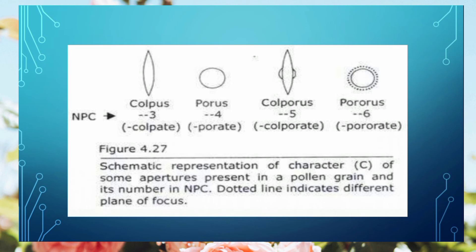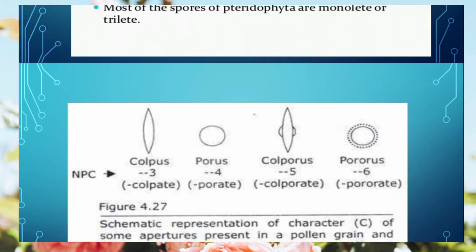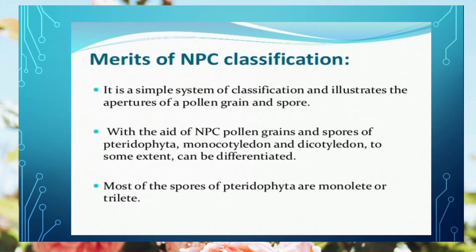In colporate, colpi are in the center and side spaces have pores as well. In porate, there is a circular pore in the center surrounded by small little pores. This provides further description of the aperture character classification.